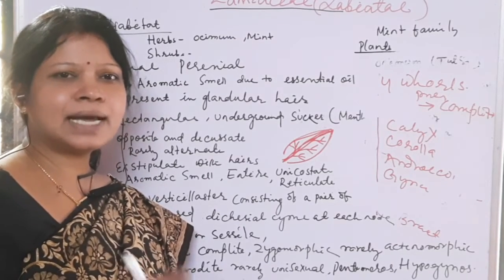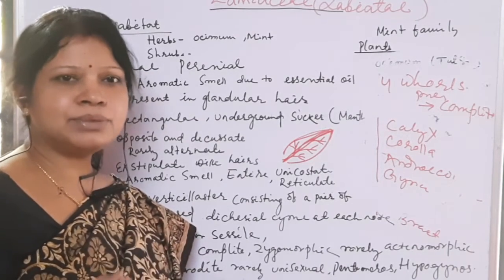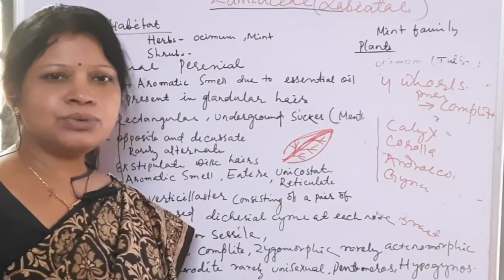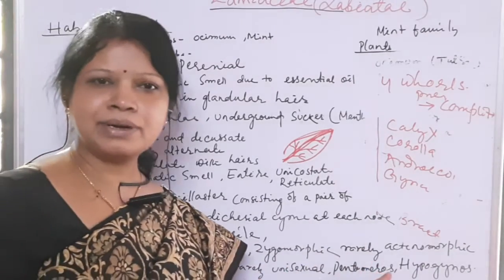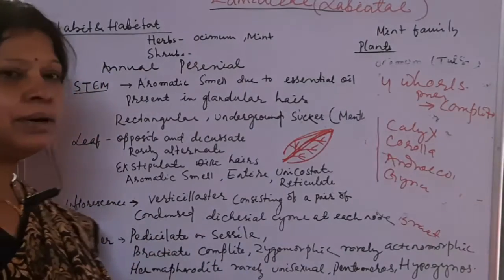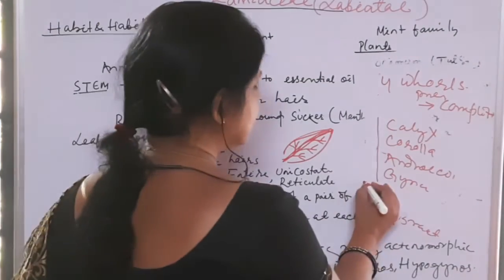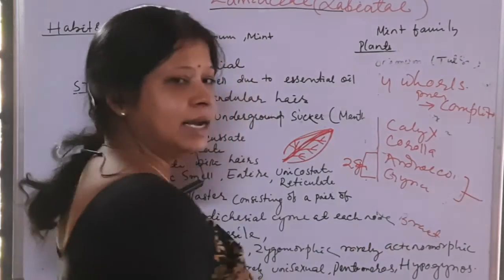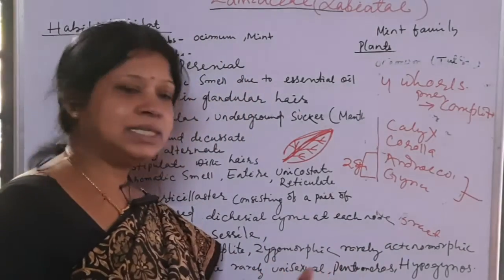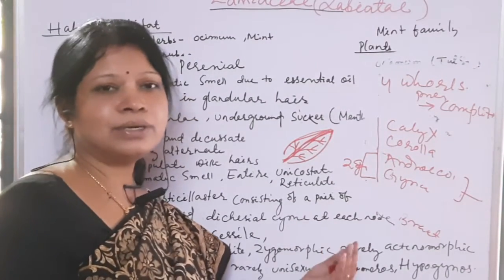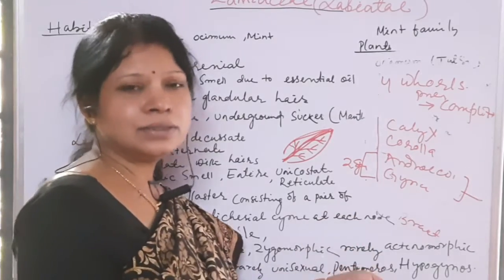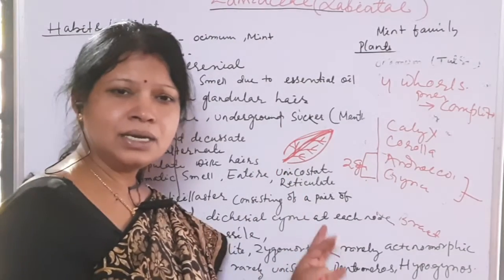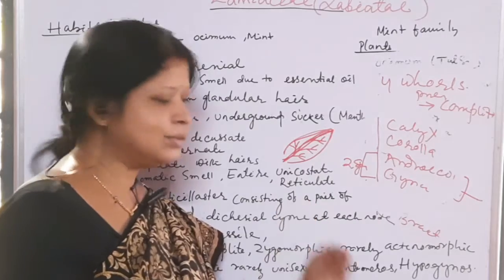These zygomorphic flowers can be identified by their unequal petals. Actinomorphic flowers have equal petals but are rare in this family; mostly they are zygomorphic. The flowers are hermaphrodite (bisexual), meaning both androecium and gynoecium are present. Rarely, unisexual flowers — bearing only stamens or only a gynoecium — are present in this family.